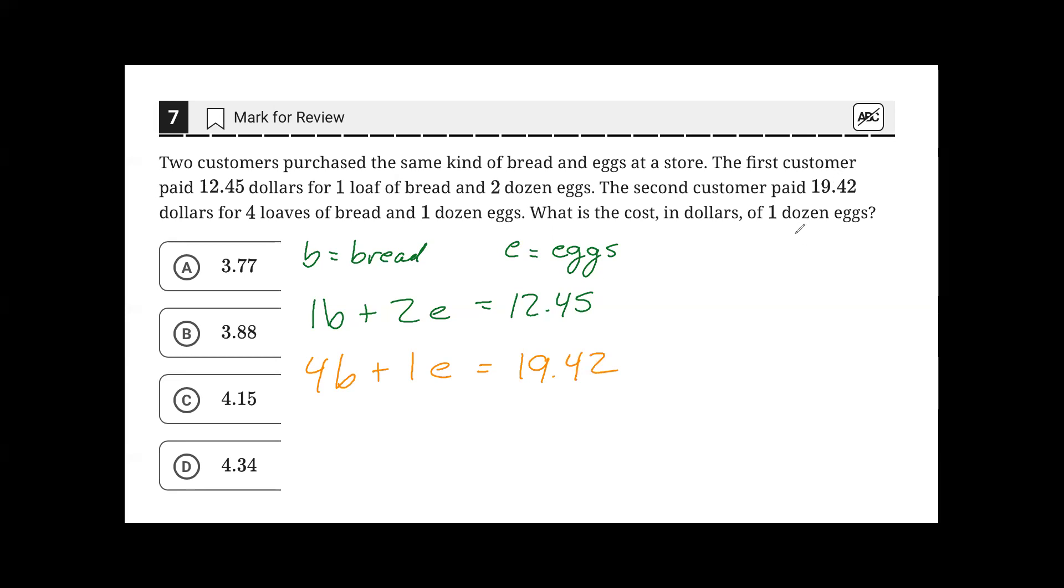Since the question is asking for the cost of eggs, it would be beneficial to remove the variable of B from the equation. One way to do that is to rewrite the first equation by subtracting 2E from both sides,